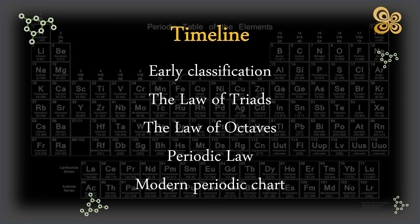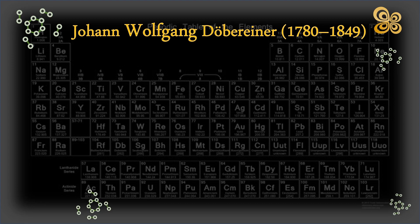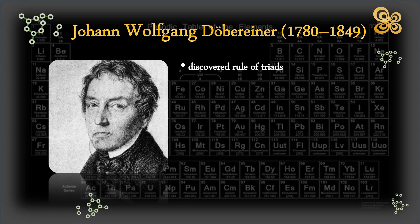German chemist Johann Wolfgang Döbereiner made significant contributions to the creation of the periodic table. His research on the rule of triads, which he discovered in 1829, is what made him most famous.